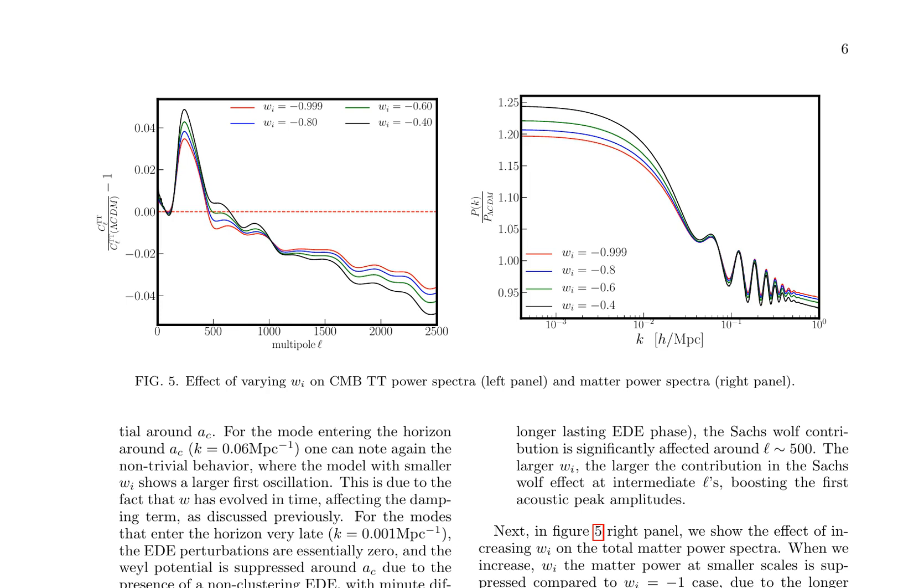The impact of varying the EED parameter WI on the CMB and matter power spectra is a crucial aspect of understanding the universe's evolution. In the context of early dark energy models, the EED parameter plays a significant role in shaping the cosmic microwave background (CMB) and matter power spectra. The CMB-TT power spectra exhibit two distinct effects due to varying WI values. Firstly, there is a diffusion damping effect, which leads to a suppression at high L values. This is caused by the increased photon-baryon fluid's viscosity and heat conduction, resulting in a decrease in the amplitude of the CMB anisotropies at smaller scales. Secondly, the Sachs-Wolfe contributions lead to an enhancement of the first acoustic peak amplitudes. This occurs as the EED parameter affects the gravitational potential, influencing the photon's trajectory and thus the observed CMB anisotropies.